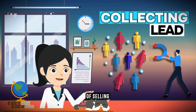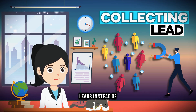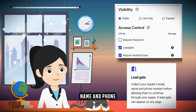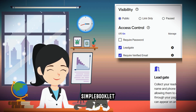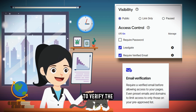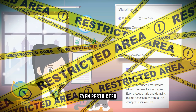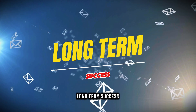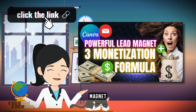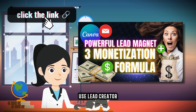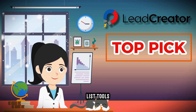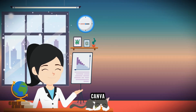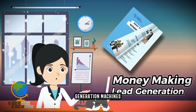Collecting leads instead of selling: if you want to use your flipbook to gather leads instead of selling it, try the Leadgate option. Leadgate lets you collect emails, names, and phone numbers before allowing access in Simple Booklet. Email verification is required before your audience can continue, and you can even receive access to a pre-approved email list. Building an email list is essential for long-term success. Check out my other video on creating profitable lead magnets, or use Lead Creator — my top pick for lead magnet and email list tools.